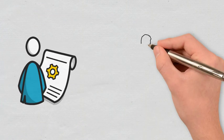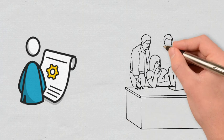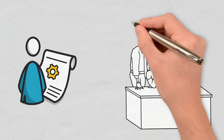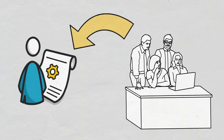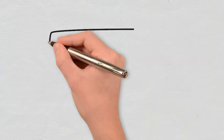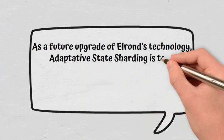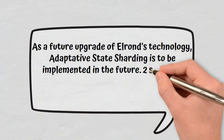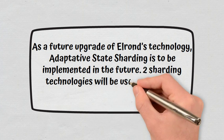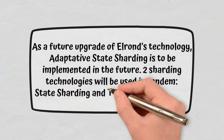It is important to note here that the Elrond ecosystem allows more freedom to developers because several programming languages can be used to create smart contracts. As a future upgrade of Elrond's technology, adaptive state sharding is to be implemented in the future. Two sharding technologies will be used in tandem, state sharding and transaction sharding.